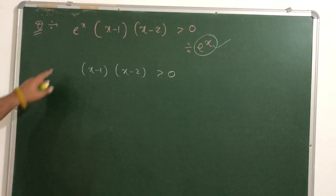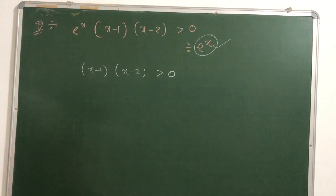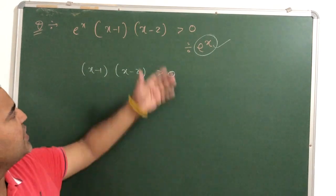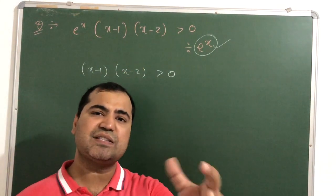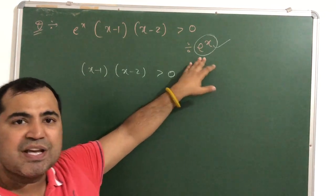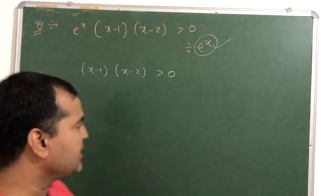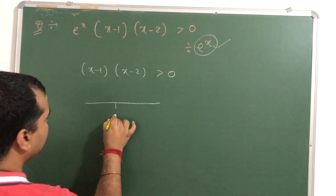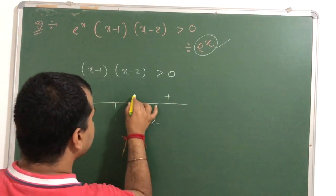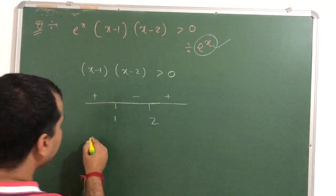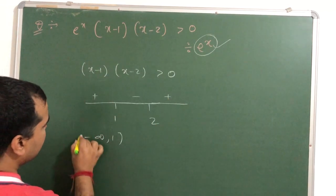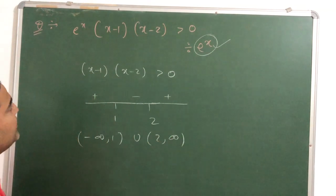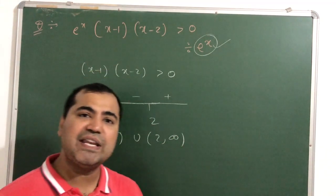Our first example is: e raised to x, times (x minus 1), times (x minus 2), greater than 0. With the help of the graph, I know that e raised to x always takes positive values, so I treat it as some positive number and divide both sides by e raised to x. Since I am dividing by a positive number, the inequality does not change. This becomes (x minus 1)(x minus 2) > 0. Plotting 1 and 2 on the number line gives plus, minus, plus — so the answer is minus infinity to 1, union 2 to infinity.